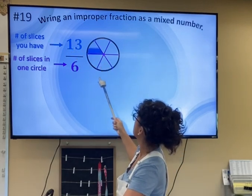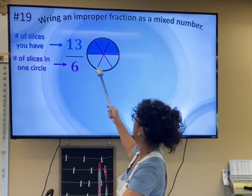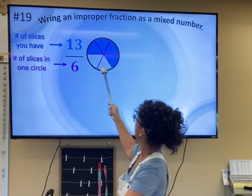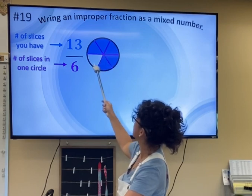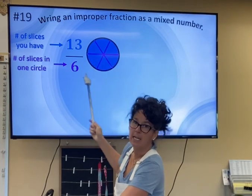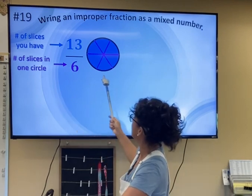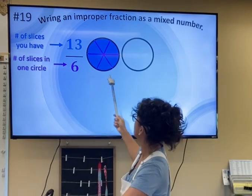So let's start filling up this circle: one piece, two, three, four, five, six. We need another circle because we have too many slices.